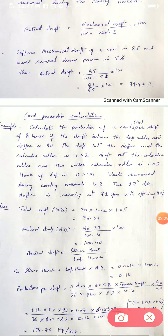Now to understand card production calculations, we take an example of a numerical. Calculate the production of a card in kilogram per shift of 8 hours. If the draft between lap roller and doffer is 90, the draft between doffer and the calendar roller is 1.02, draft between calendar roller and the coiler calendar roller is 1.05, hank of lap is 0.0014, waste removed during carding amounts 4 percent. The 27 inch diameter doffer is running at 32 rpm with an efficiency of 90 percent.